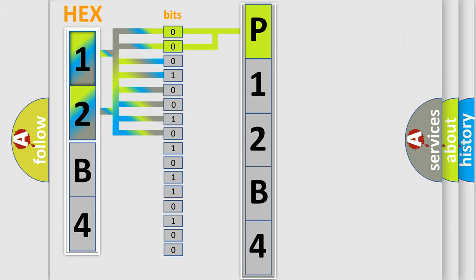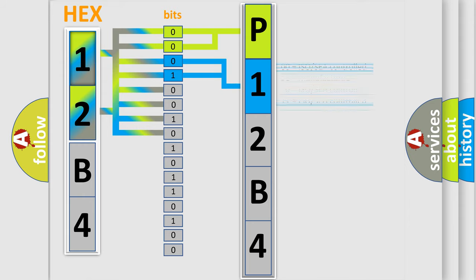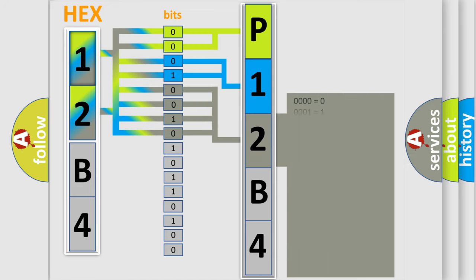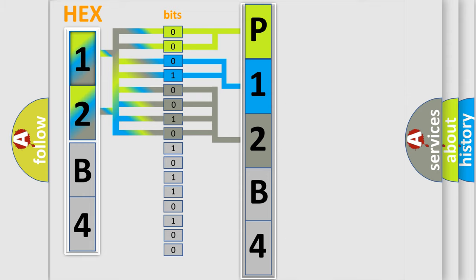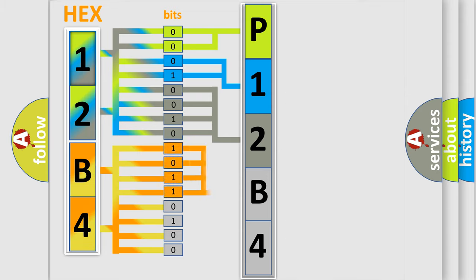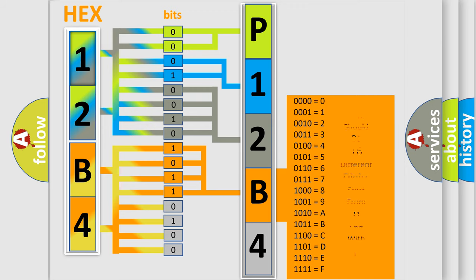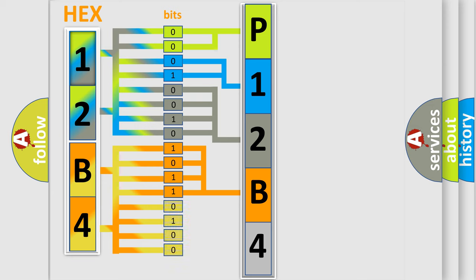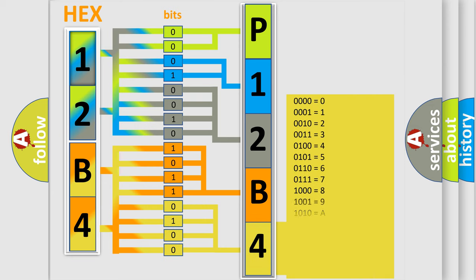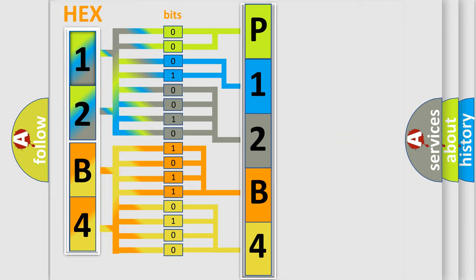The next two bits determine the second character. The last bits of the first byte define the third character of the code. The second byte is composed of a combination of eight bits. The first four bits determine the fourth character of the code, and the combination of the last four bits defines the fifth character. A single byte conceals 256 possible combinations.